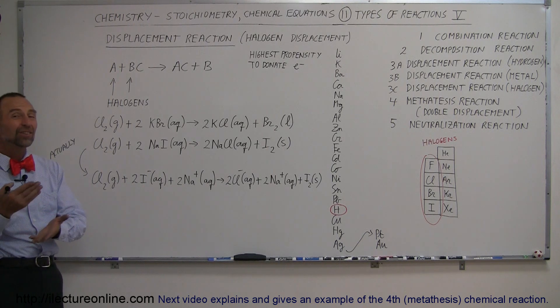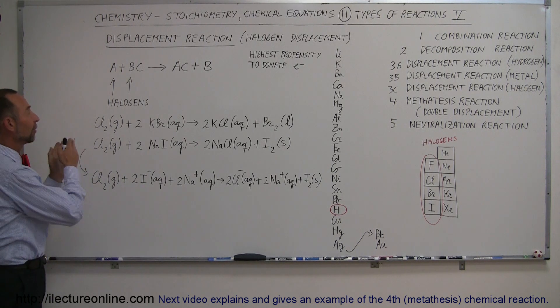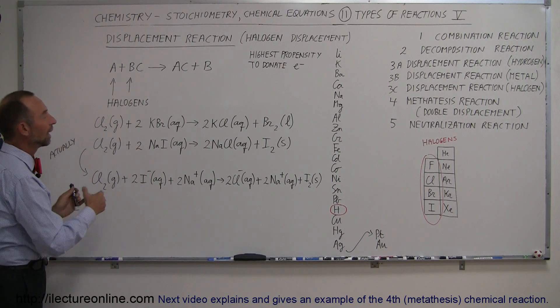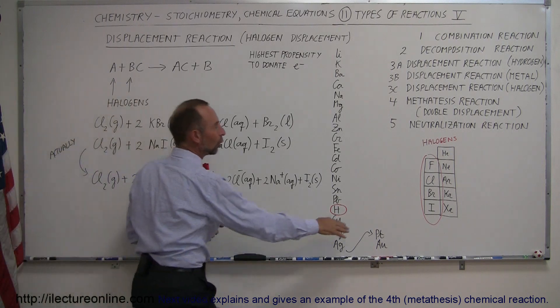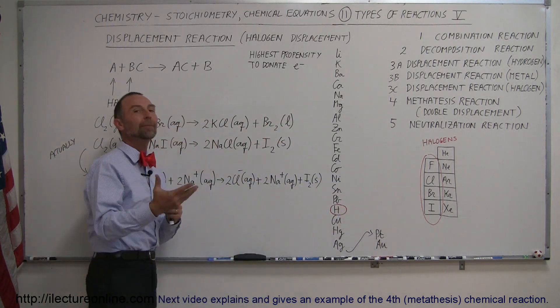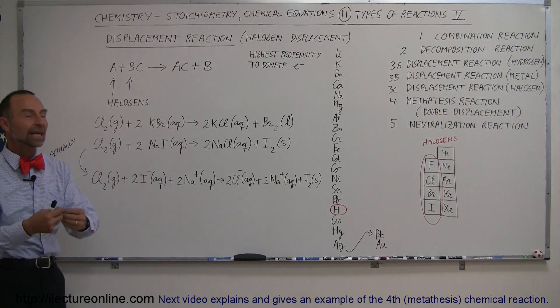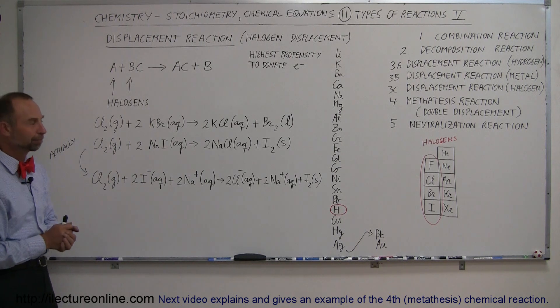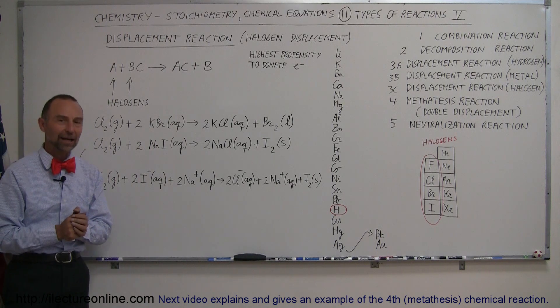When a displacement reaction occurs, there's an exchange of electrons from the halogen that was introduced to the other halogen that's already there, which is lower on the activity table. The lower halogen then precipitates out, and the introduced halogen remains in the aqueous solution as an ion. This is what we call a halogen displacement reaction.